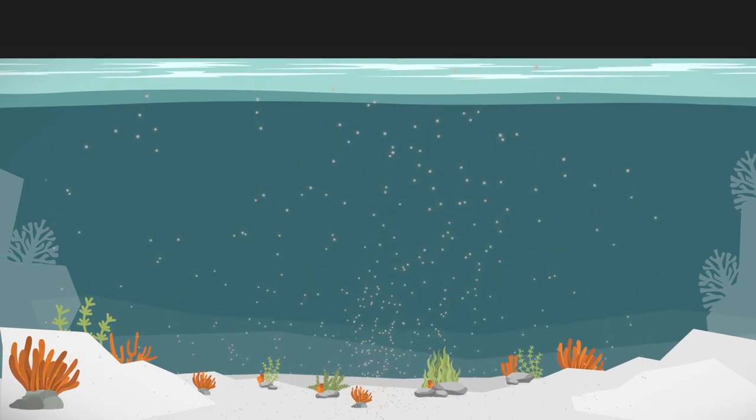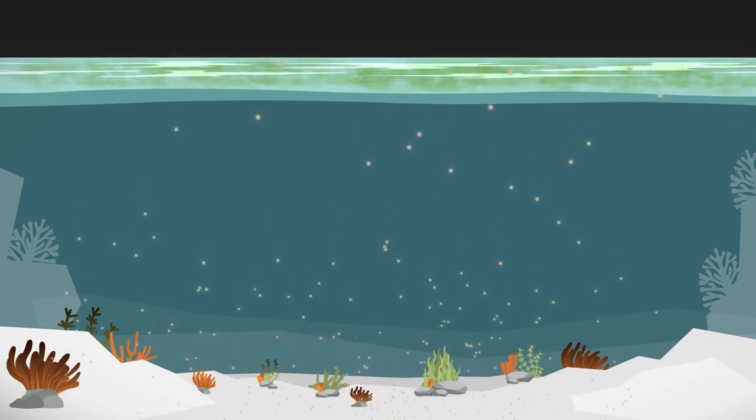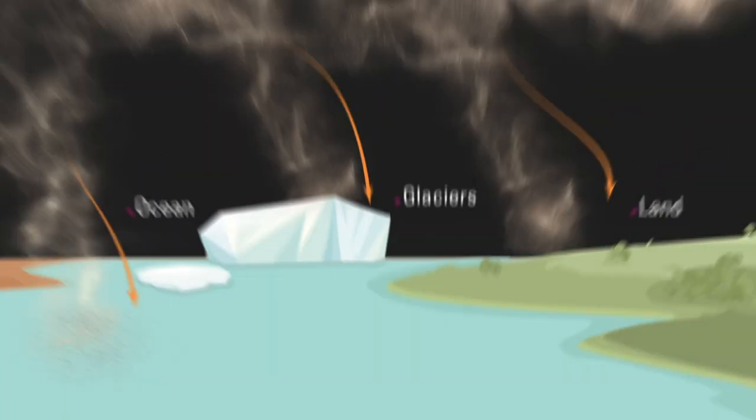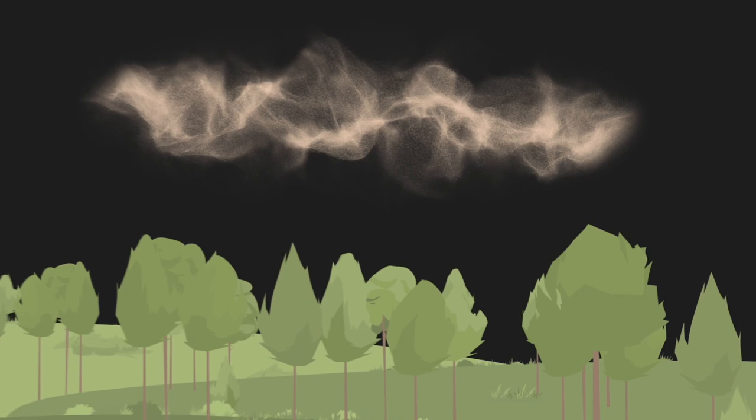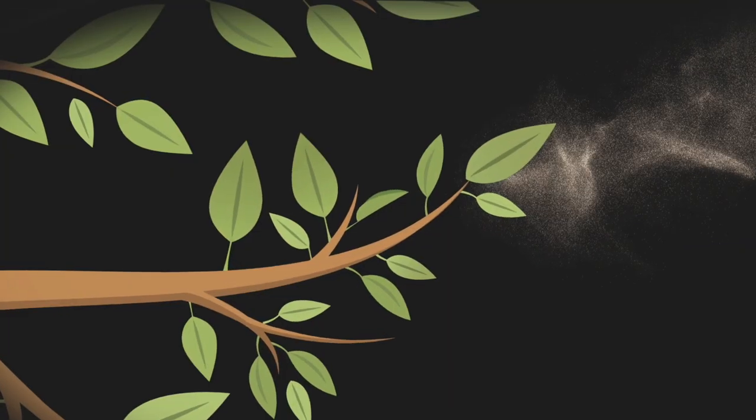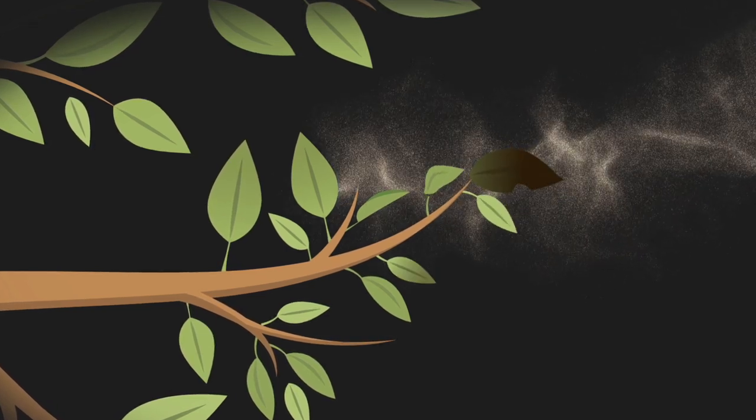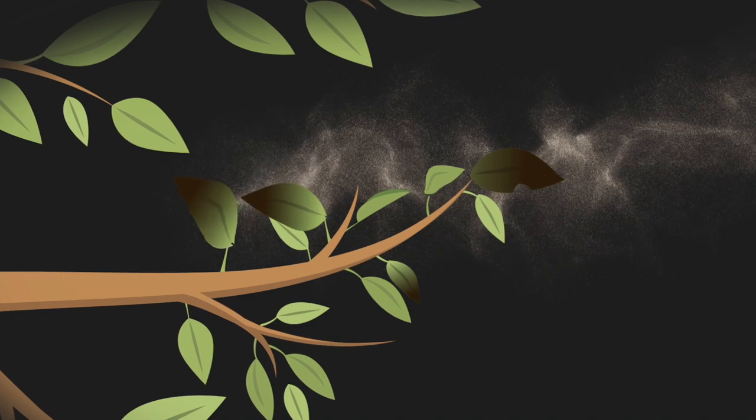But it can also damage coral reefs or cause harmful algal blooms. Over land, the nutrients in dust fertilize the rainforests, but dust can also disrupt photosynthesis and damage plants and trees.